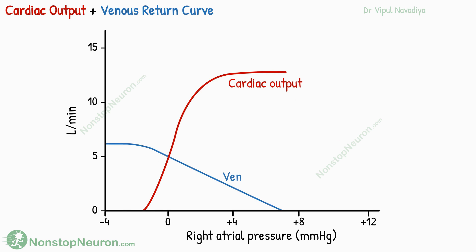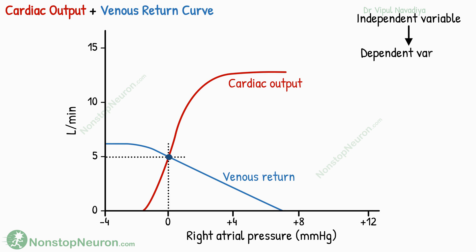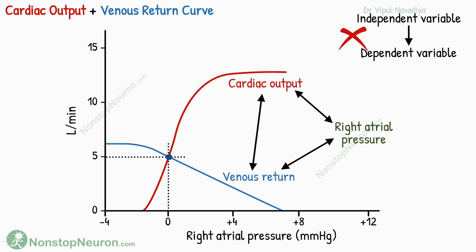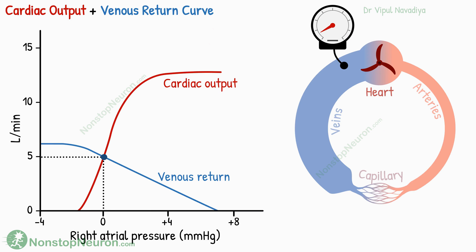Now let's put the cardiac output curve and venous return curve together in the same graph. The point where both curves intersect is the equilibrium point. Under normal resting conditions, cardiac output and venous return are both 5 liters per minute, and right atrial pressure is about 0 mmHg. In this graph, none of the parameters is an absolutely independent or dependent variable — cardiac output, venous return, and right atrial pressure all depend on each other, which can make this graph tricky to understand.